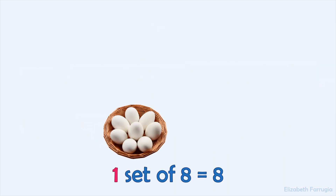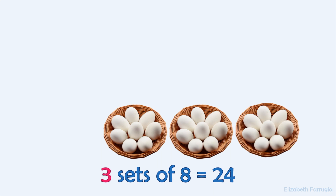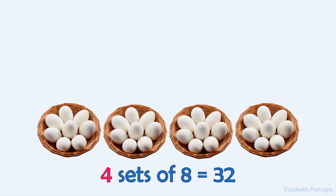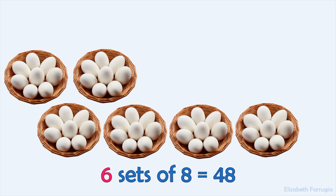One set of eight makes eight. Two sets of eight make sixteen. Three sets of eight make twenty-four. Four sets of eight make thirty-two. Five sets of eight make forty. Six sets of eight make forty-eight.